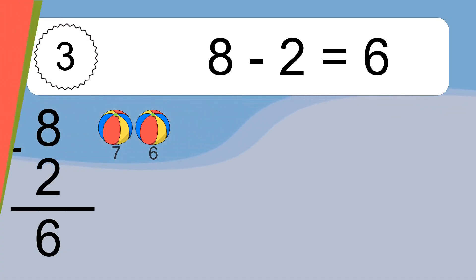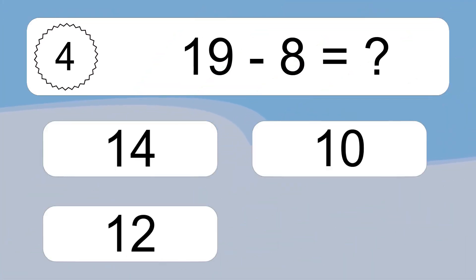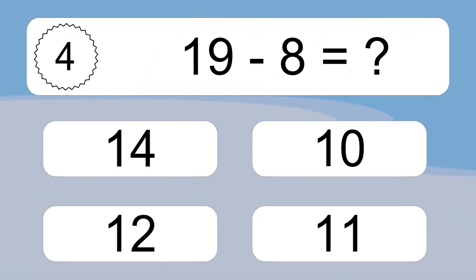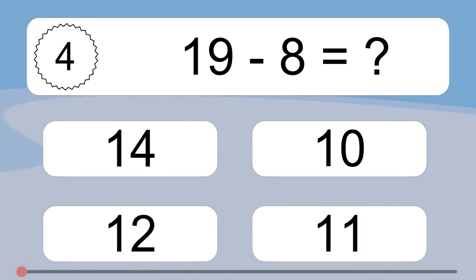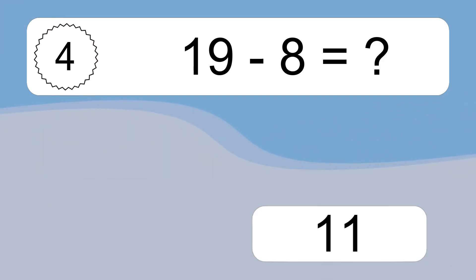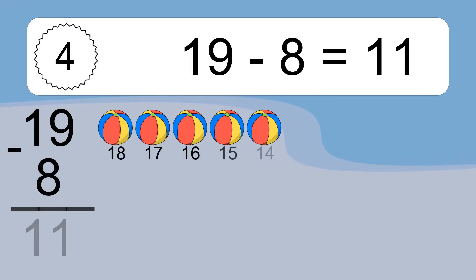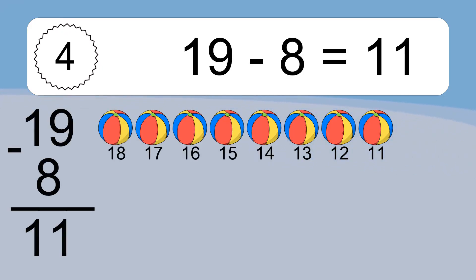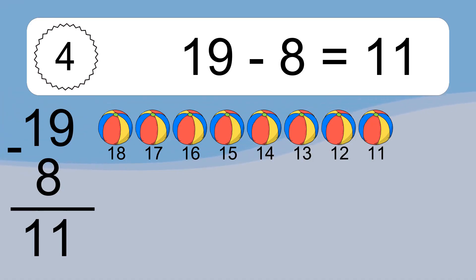19 minus 8 equals what? 19 minus 8 equals 11. Let's count it. 18, 17, 16, 15, 14, 13, 12, 11.